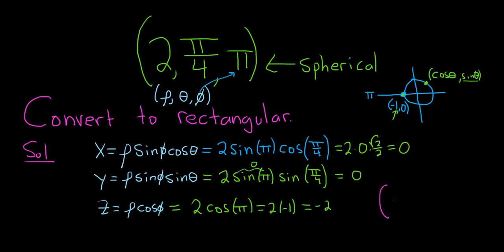So the final answer to this problem would be the ordered triple 0, comma 0, comma negative 2. That would be the answer to this problem. These are the rectangular coordinates. That's it.